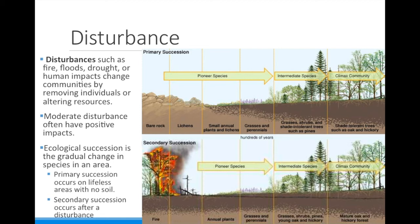So a forest is burnt down, and then as the years pass, small annual plants and grasses grow back, then eventually smaller trees, then larger trees, and the forest will be completely replaced. One of the reasons grasslands don't become forests is because they are constantly being disturbed by drought or by grazing animals.